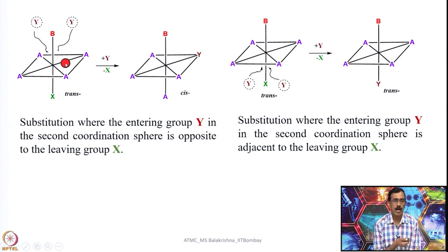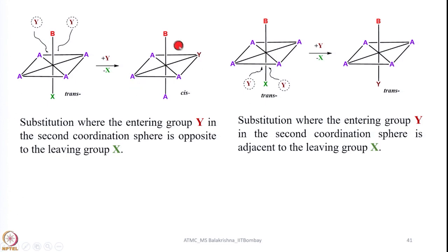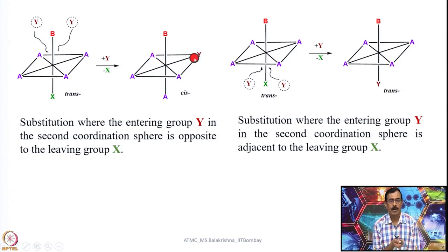When we start the substitution reaction, in the second coordination sphere Y has an option of entering in a position opposite to the leaving group. In that case, one of the A groups would occupy the position vacated by X, and the cis compound would result. Y can go to either of these positions, giving a cis relationship between B and Y — hence it is called the cis compound. The trans compound gives a cis compound if the entering group is on the opposite side of the leaving group.